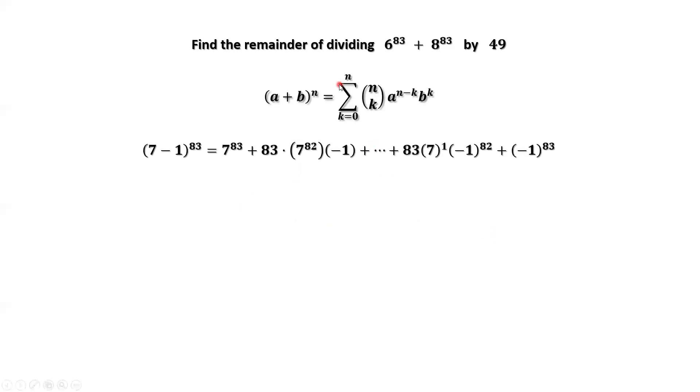Apply this binomial formula for the first term, 7 minus 1 to the power of 83. The sum of powers of each term is 83. Here is 7 to the power of 83 times negative 1 to the power of 0.